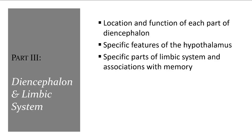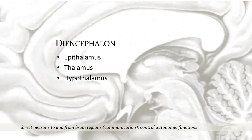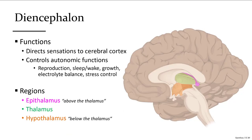Now we'll move on to the diencephalon and limbic system. The diencephalon, literally meaning 'between brain,' is comprised of three regions and serves as a relay station for incoming sensory impulses directed to various locations of the cerebral hemispheres. It is also the location of the master controller of our hormones and receives input about the state of our body, such as hunger, temperature, arousal, sleep-wake patterns, hormone regulation of reproduction, growth, and stress.